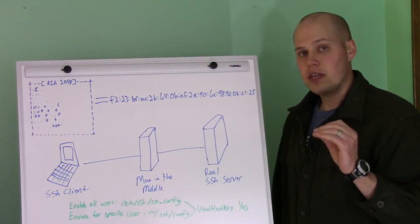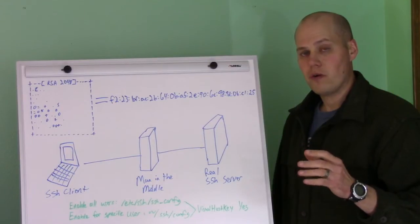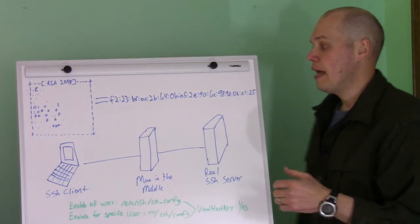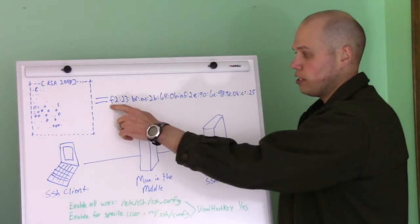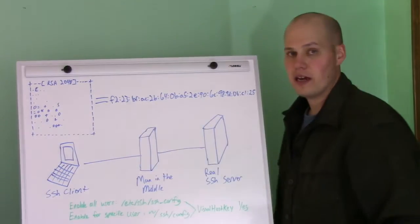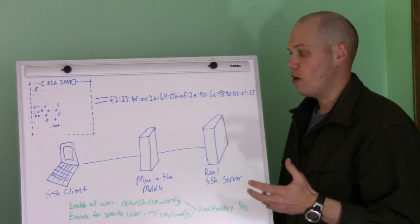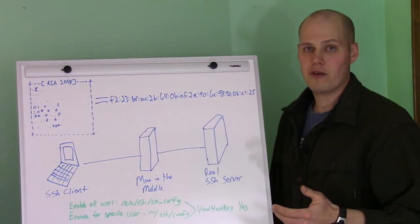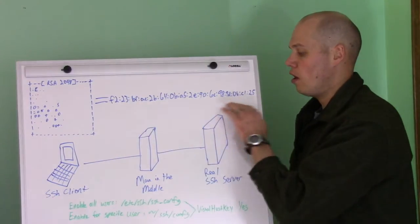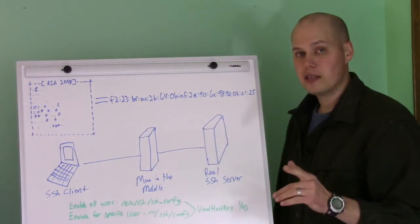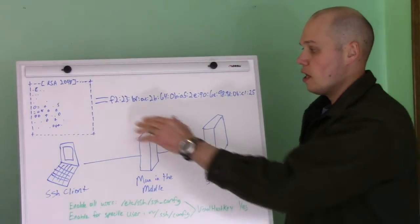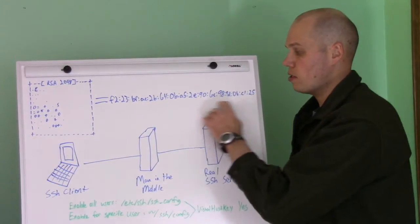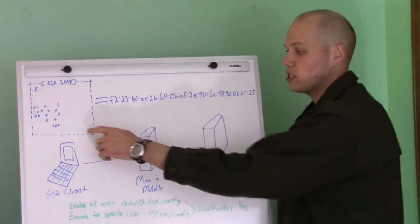Now, in OpenSSH a few years ago, they came up with this thing called a visual host key, and that's what we're going to talk about today. And so basically, this big long host key here is not easy for a person to remember. If you saw this every day when you logged in, you wouldn't remember it after, even if you logged in the same server for a year, you wouldn't remember this. But what they decided to do was come up with an algorithm that converts the host key into a visual representation.